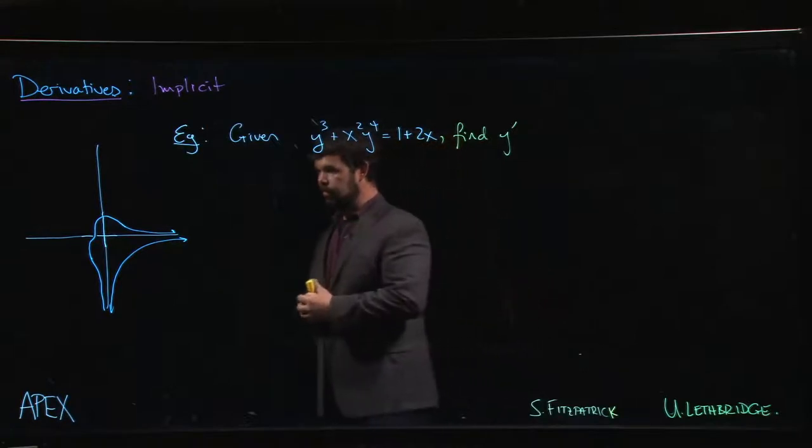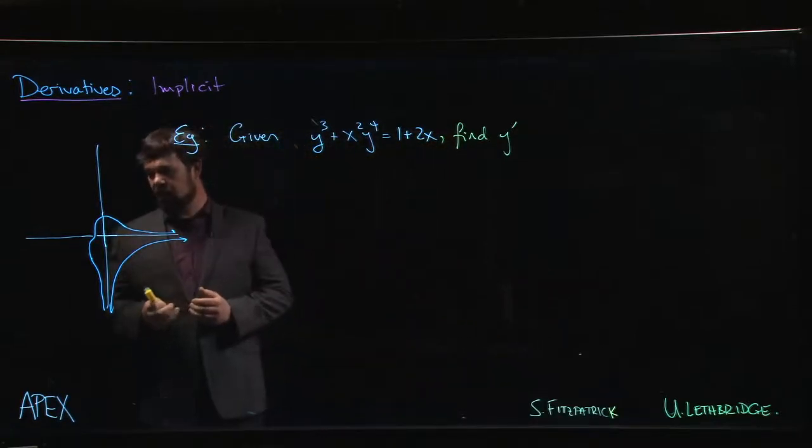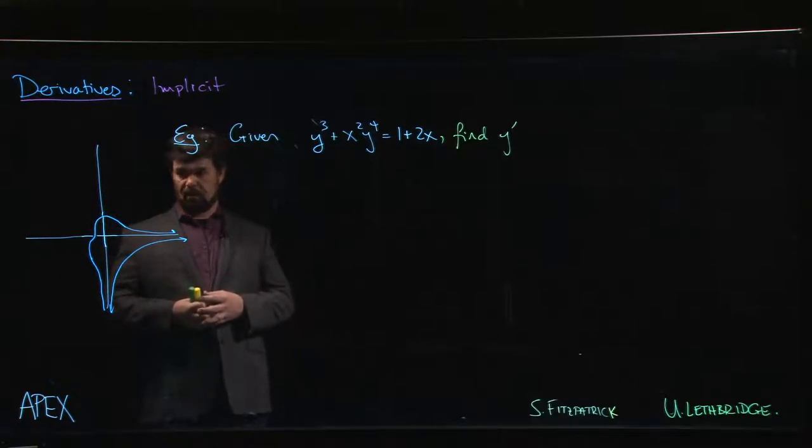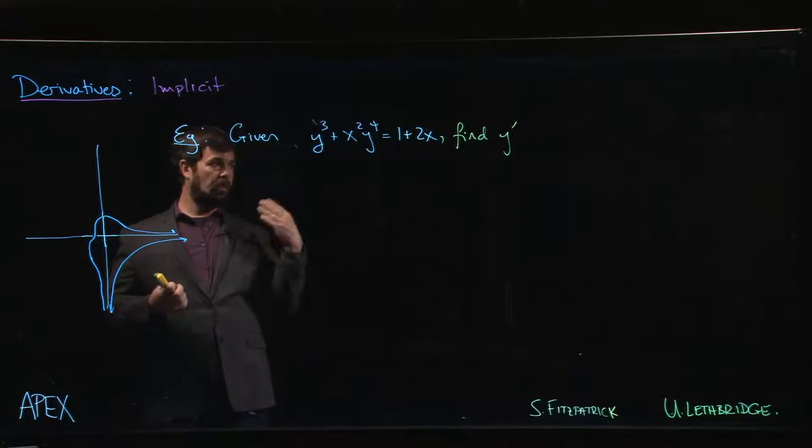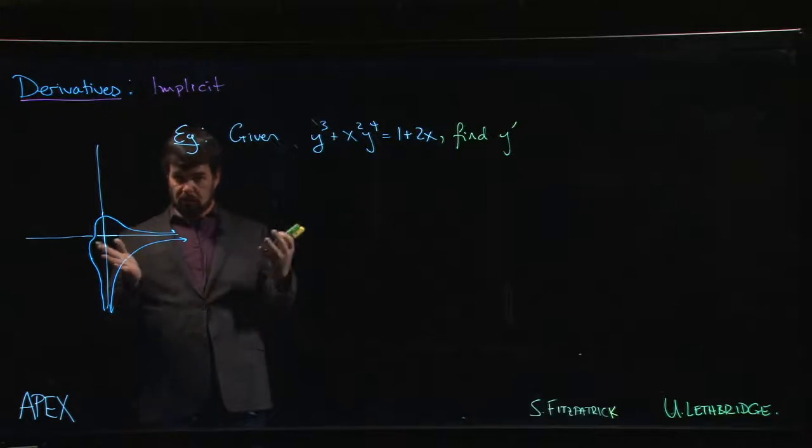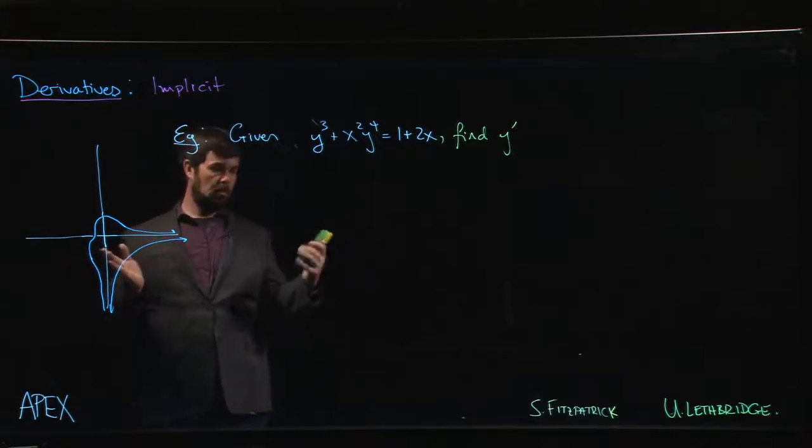But there are pieces of that curve that certainly could be realized as the graph of a function. And that's the whole point of implicit differentiation. We can't globally describe the curve as the graph of a function, but locally we can. And as long as we're only interested in finding y prime at points where locally the curve can be expressed as a graph of a function, we'll be fine.